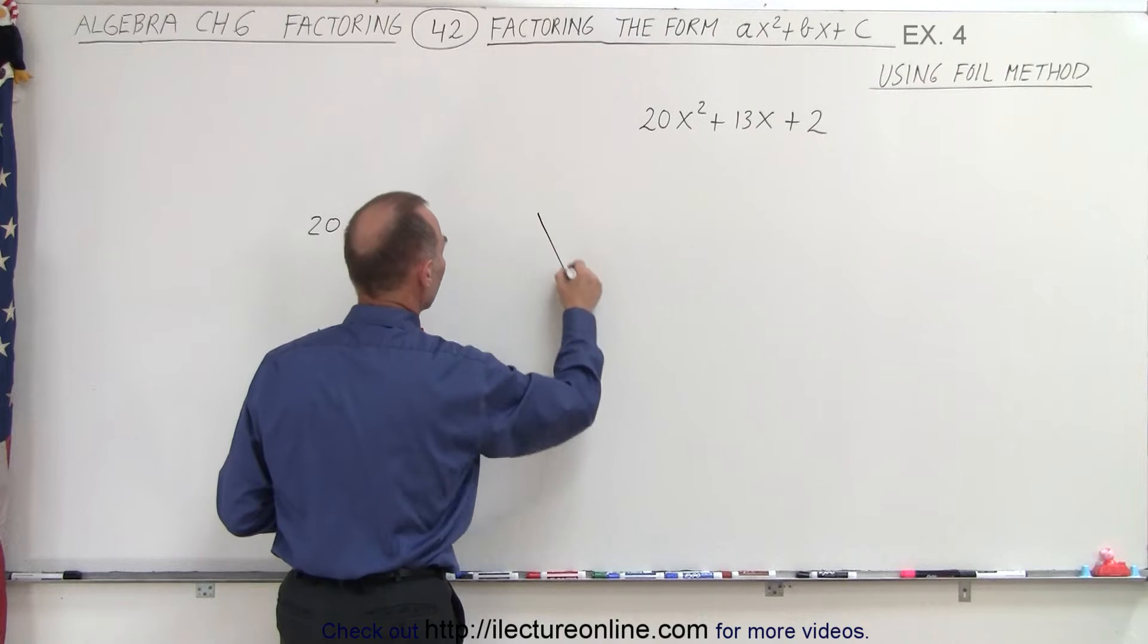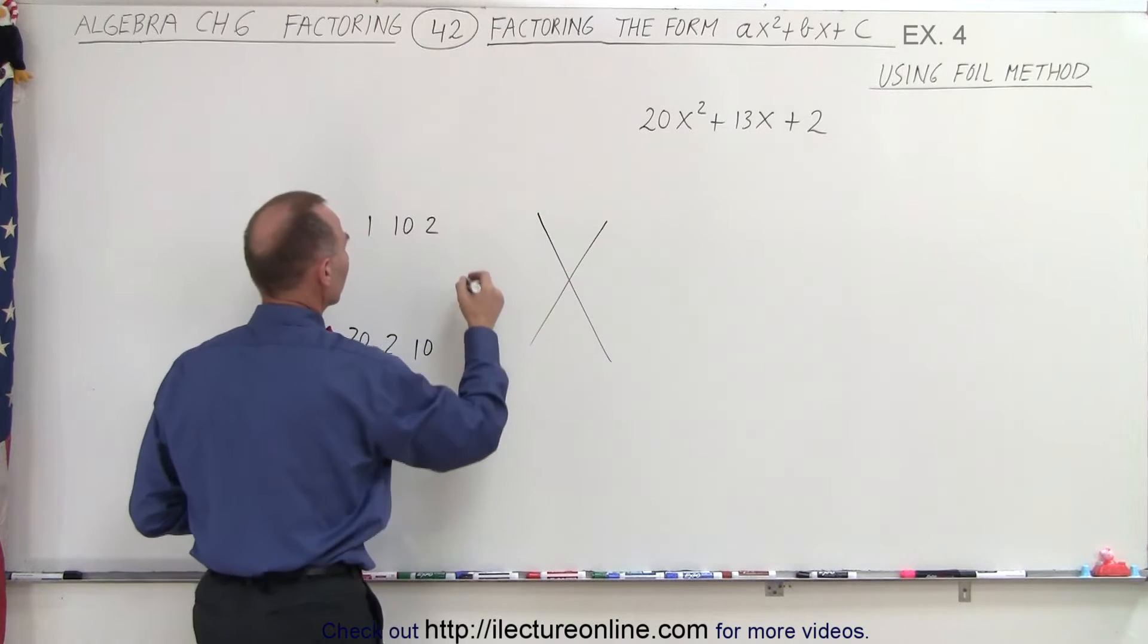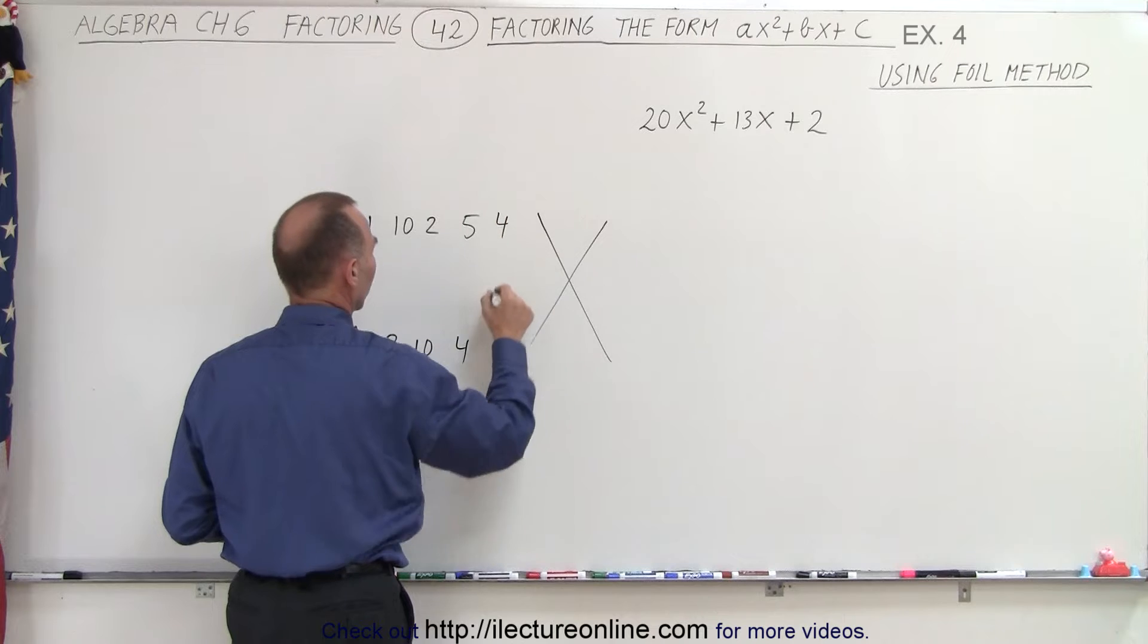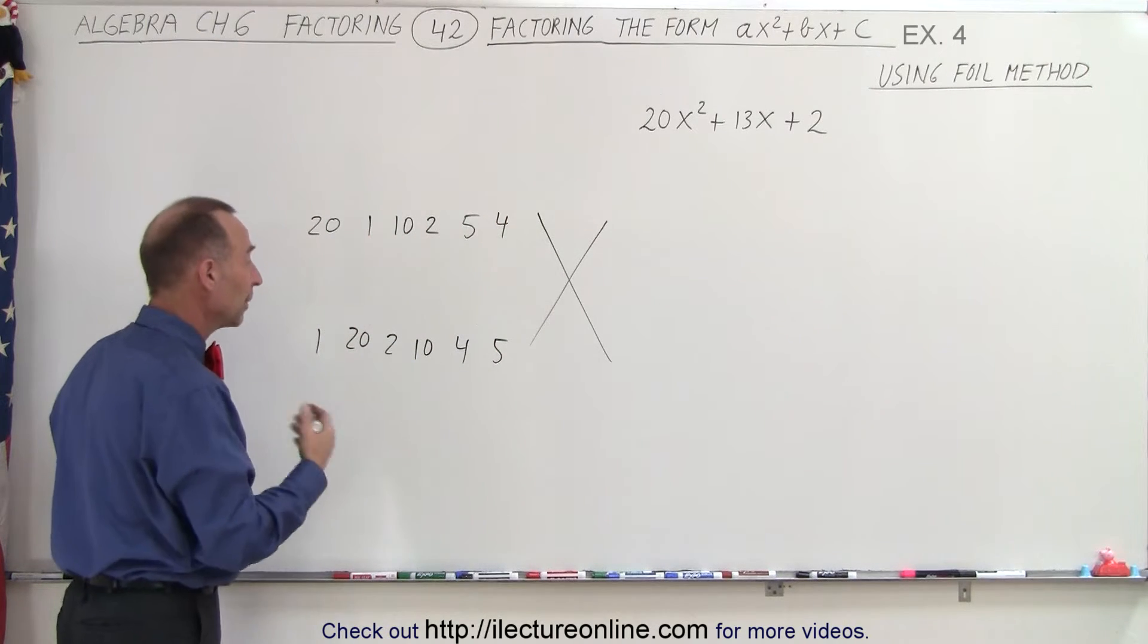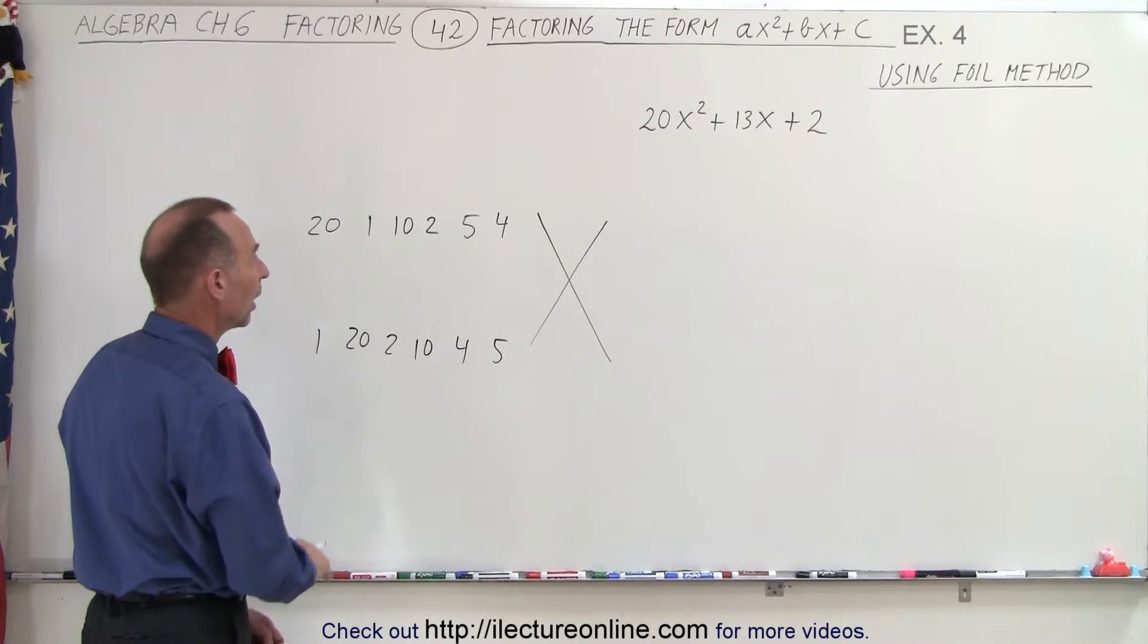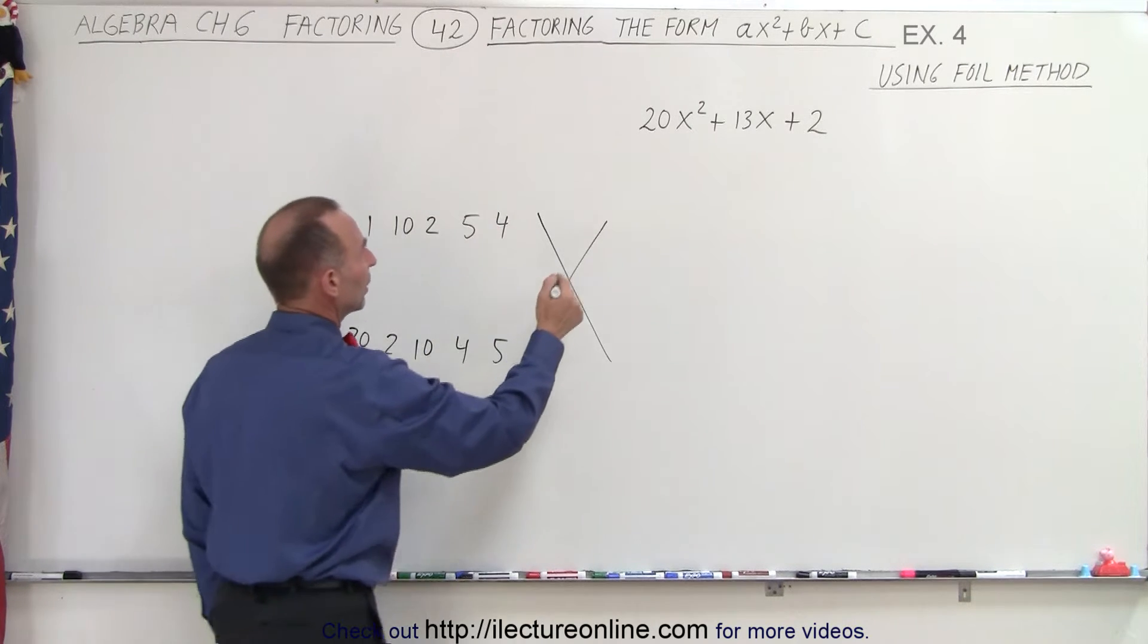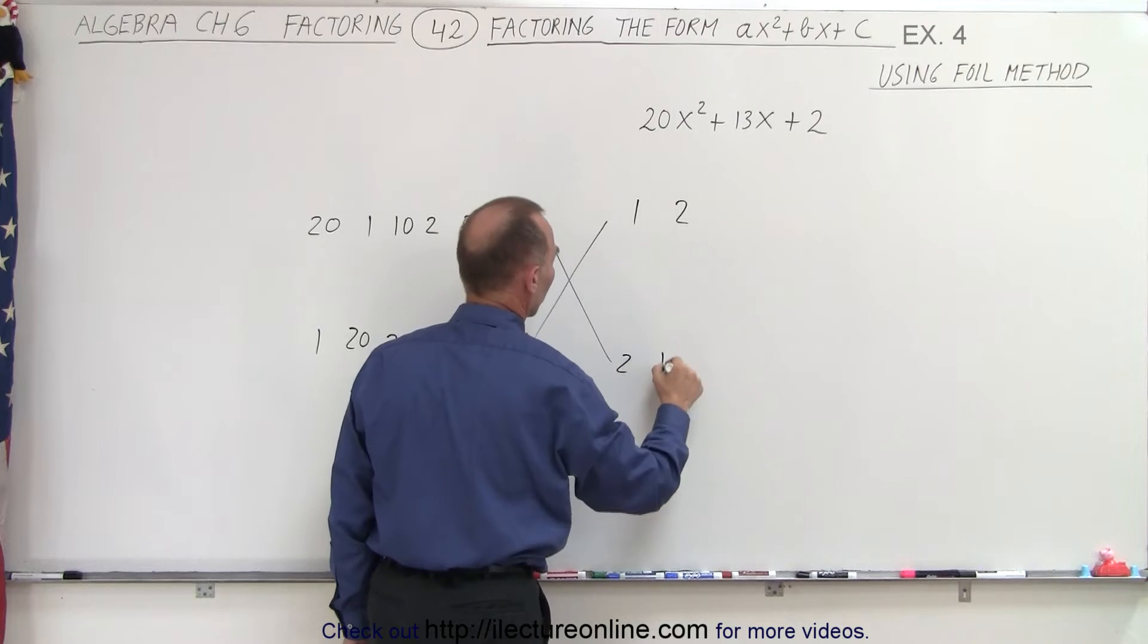Those are more likely scenarios, and then finally the combinations of 5 and 4, or 4 and 5, which are probably the most probable combinations. On the other side to get the number 2 it can only be 1 and 2, and 2 and 1.